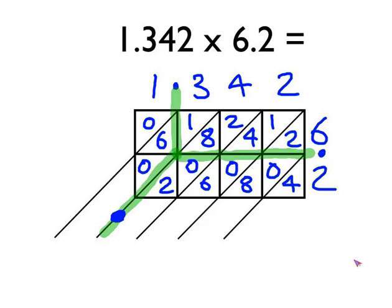Then we add up the columns, starting from the right-hand side. The first column, the total of that is just that 4. Then we've got in the next column, 2, add 0, add 8, is 10. So we write the 0 of the 10 there and carry the 1.